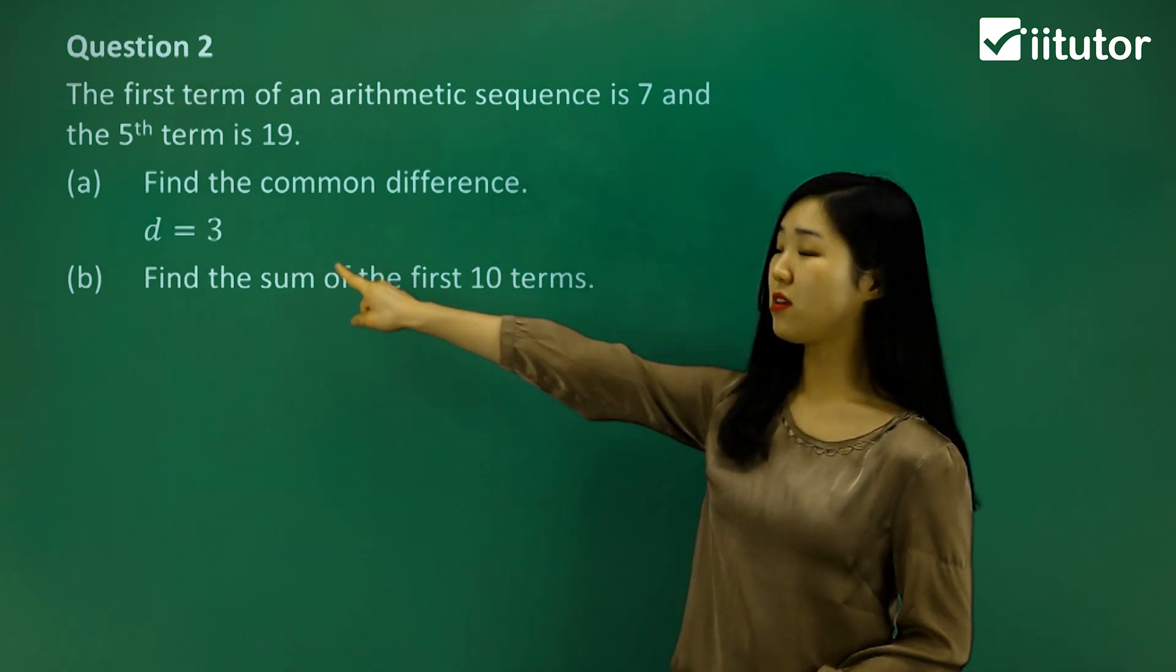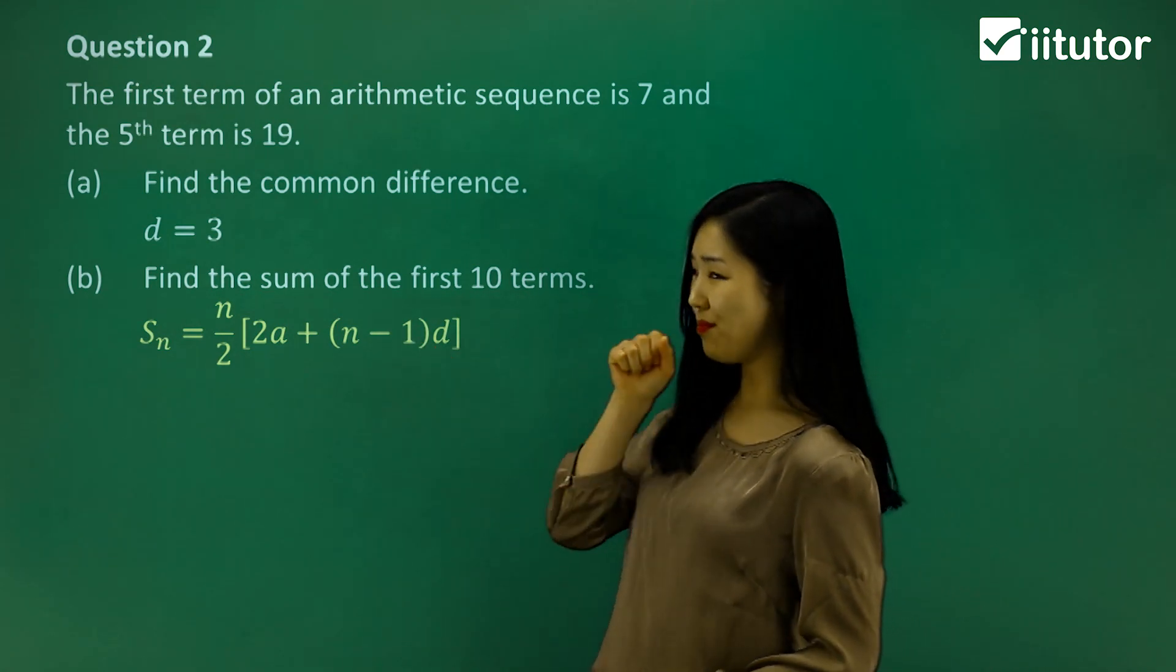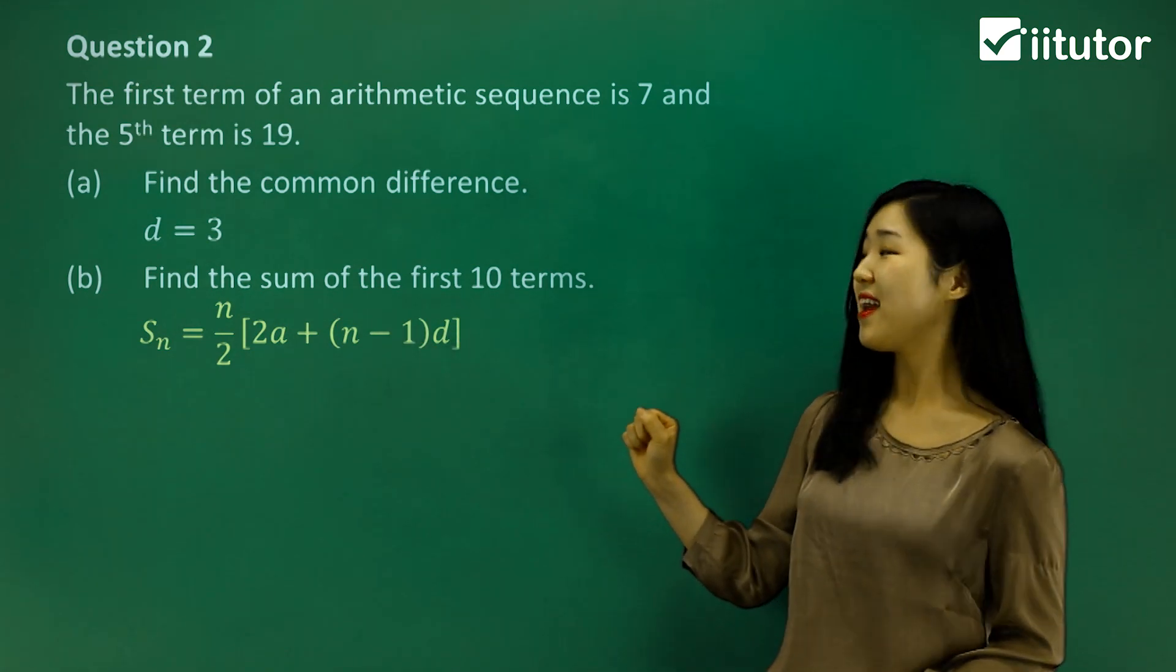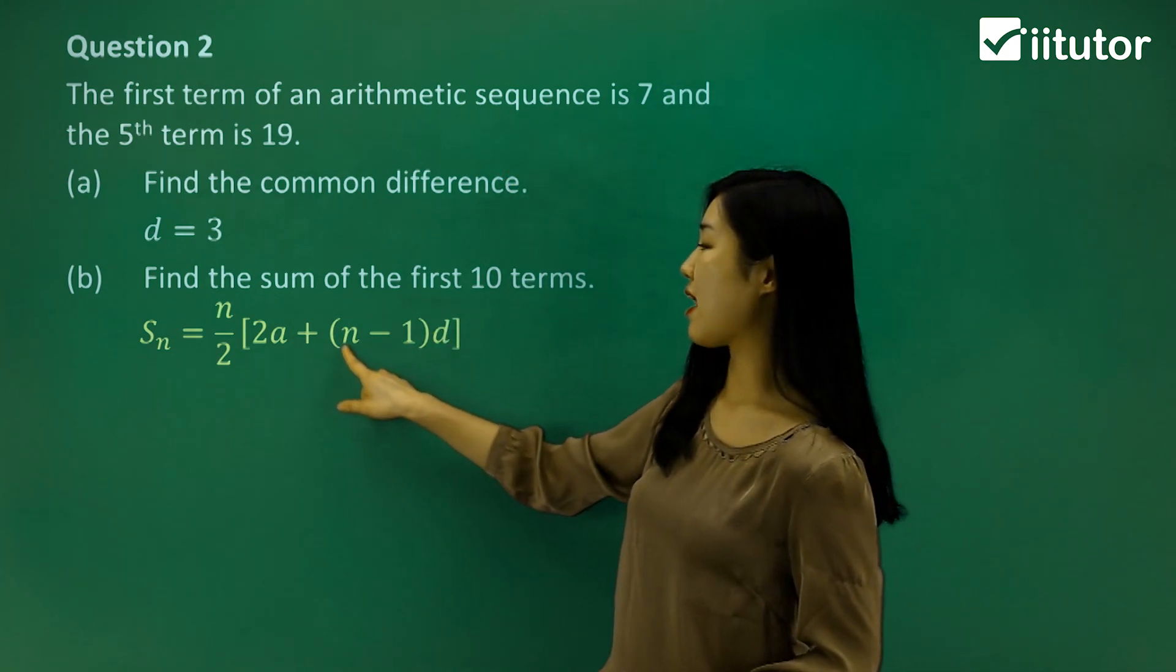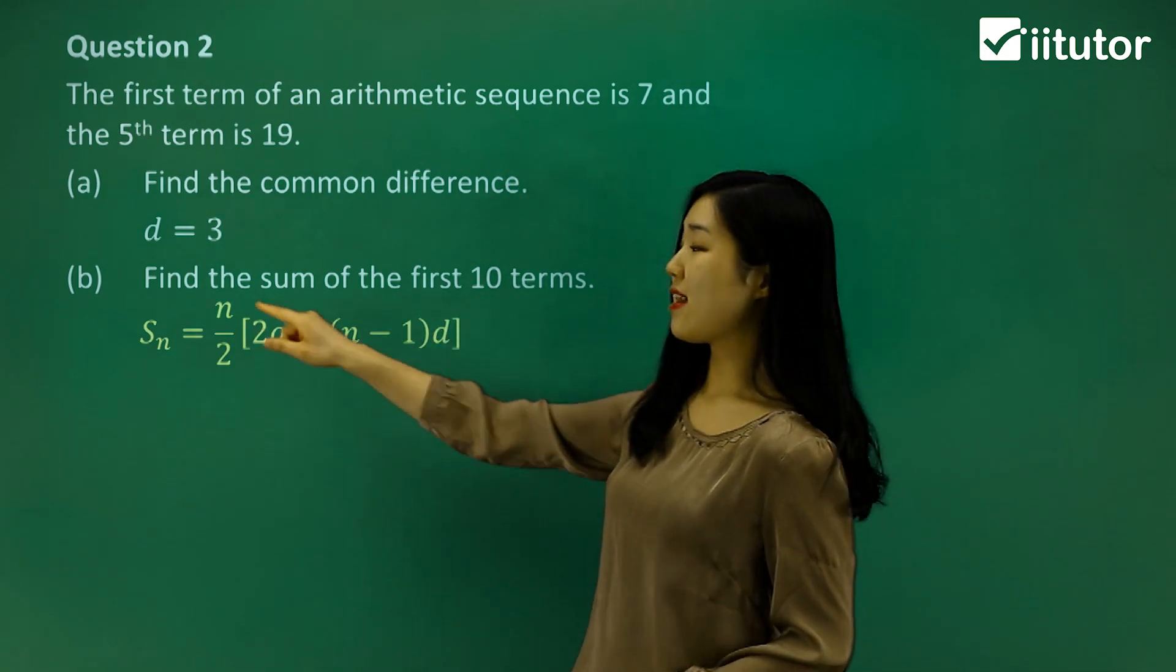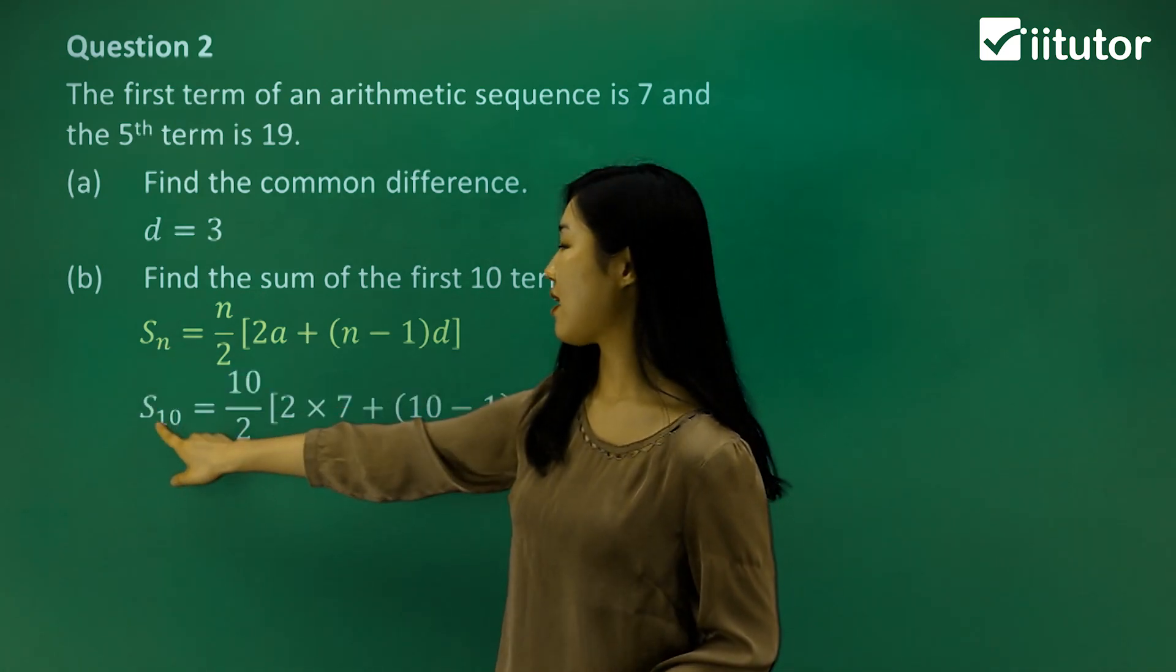Now we know what the common difference is, so we have to use our formula here, where difference is going to be 3. And we know that the first term, they tell us it's going to be 7, so I'll replace the a with the 7. And what's n going to be? It's going to be 10. So I've replaced the n with 10.